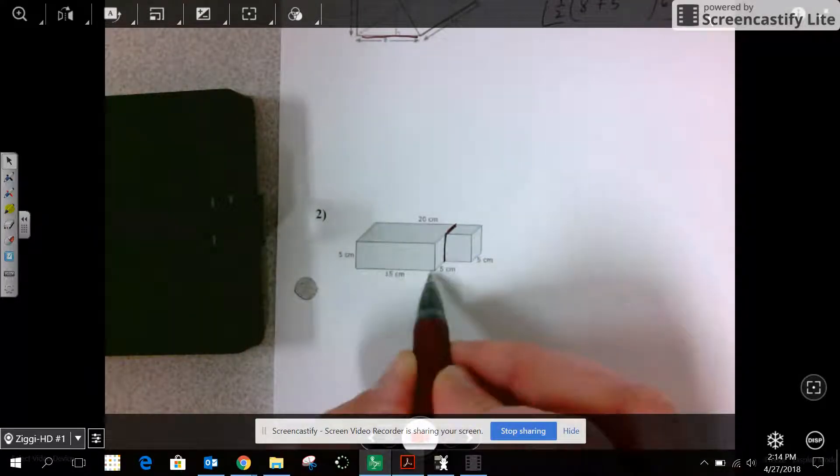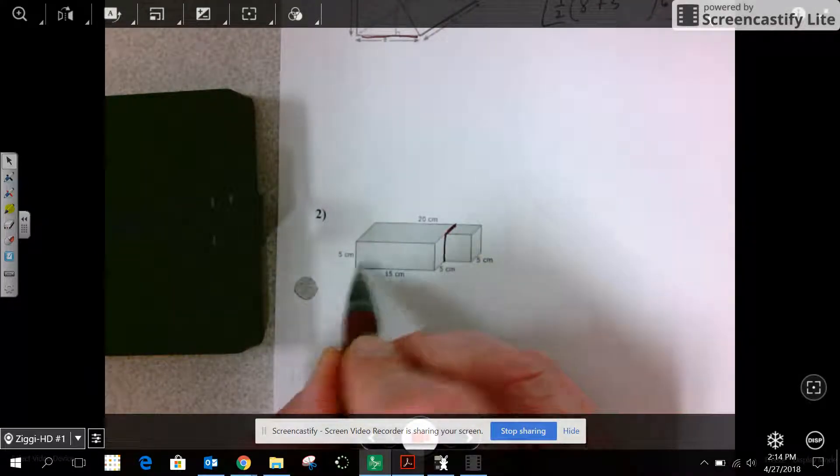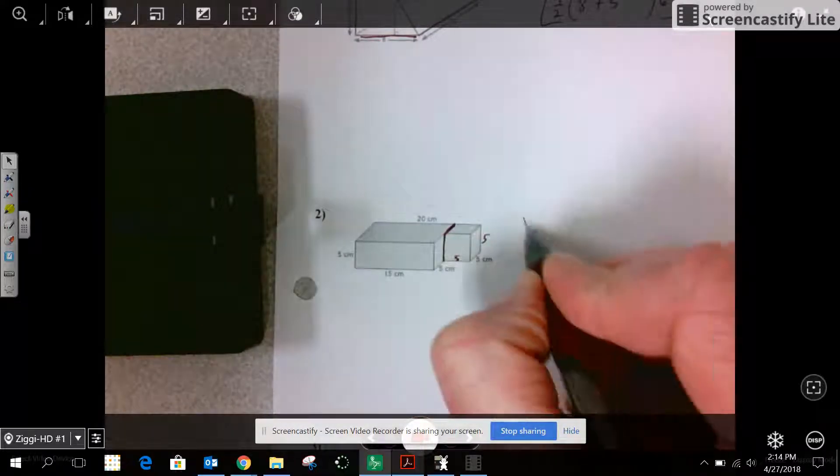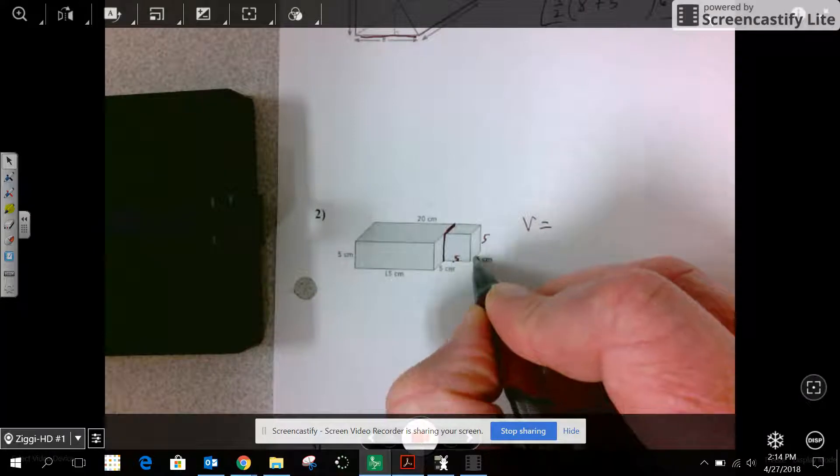So since this is 15 and the whole thing is 20, I know this is 5, and I know the height is 5. So I have this cube that's 5 by 5 by 5.